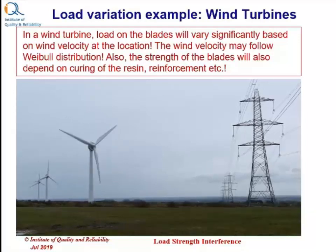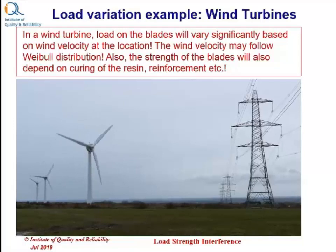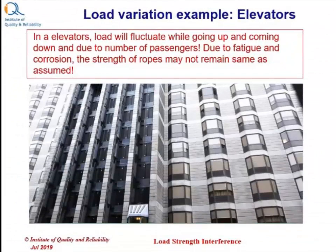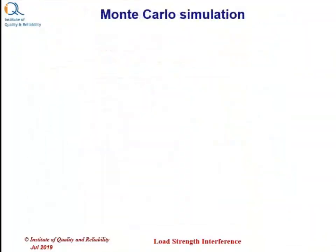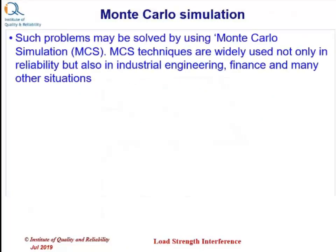Sometimes the wind velocity is modeled using Weibull distribution. Also, the strength of the turbine blades can vary because of the resin configuration or reinforcement and many other factors. Similarly, in elevators, the load can vary because of the upward and downward movement of the elevator and the number of passengers using it. Also, the strength of the rope may not remain the same because of corrosion and fatigue. Therefore, such problems may require solutions using Monte Carlo simulation.